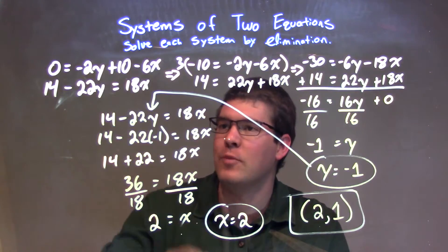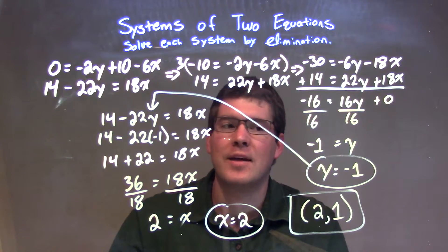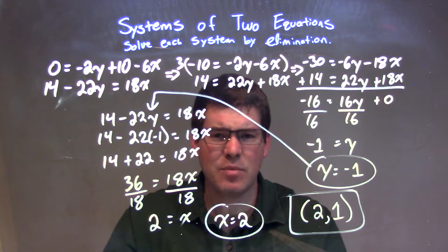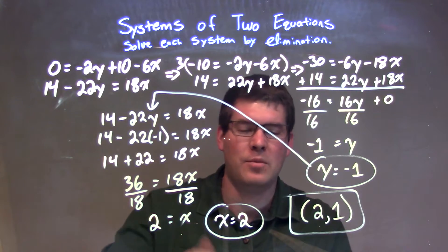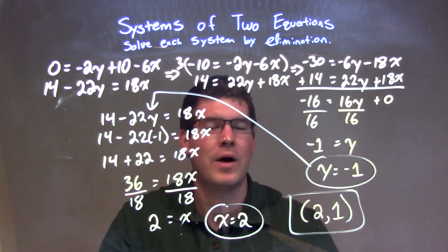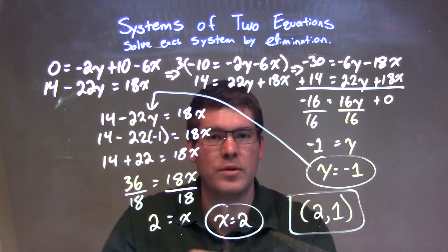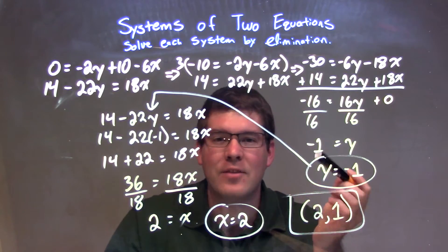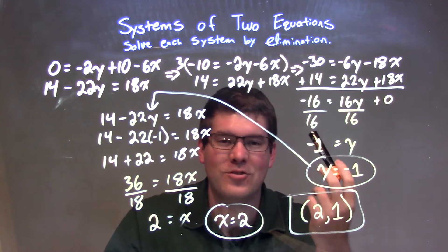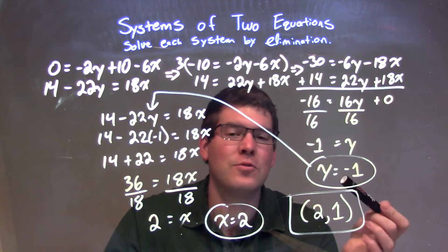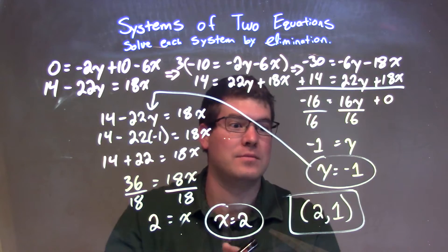I plugged that into my second equation. It could have been any one—I chose my second equation. And I plugged that in for y, simplified, and solved for x. In doing so, I got x to be 2. Now I had x as 2, y is negative 1. I can write that as a coordinate point. Our final answer of the system of equations using elimination is 2 comma negative 1.